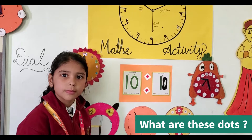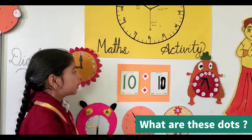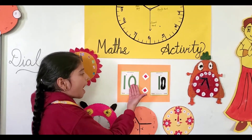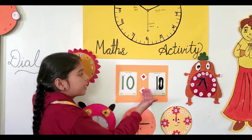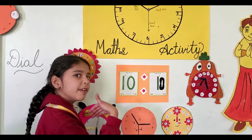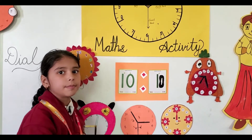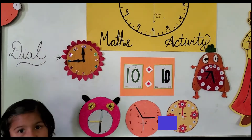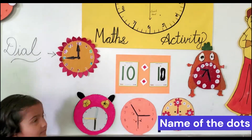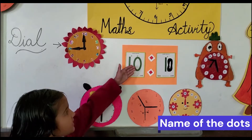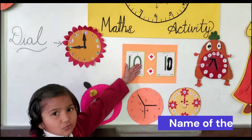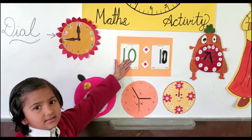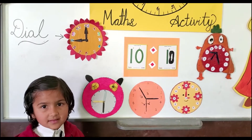Sirat, what about these two dots? These two dots separate the hours and minutes when we write the time. Pari, what do we call these two dots? These two dots are called a colon.